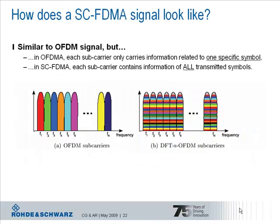This picture visualizes what we just learned very well. When we compare classical OFDM used in the downlink and single-carrier FDMA or DFT spread OFDM used for the uplink, we can say that in OFDM each subcarrier carries only information related to one specific symbol. This is indicated by the color used for the subcarriers, as seen on the left-hand side of the graph. In single-carrier FDMA, each subcarrier contains information of all transmitted symbols — each subcarrier carries a little bit of red, green, blue, orange, and so on. With DFT precoding, we shift around the problem of high amplitudes due to subcarriers being in phase.